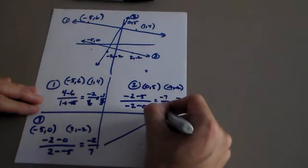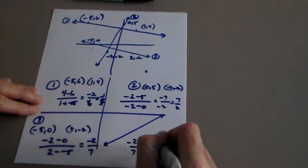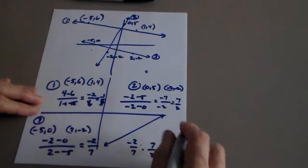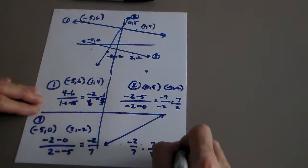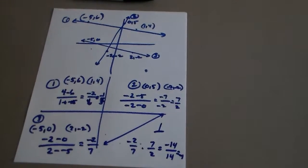So I get negative two over seven. Well, look at that. How about that? Negative two over seven and seven over two. They are negative reciprocals of each other, which means their slope is negative one, so those two are perpendicular.